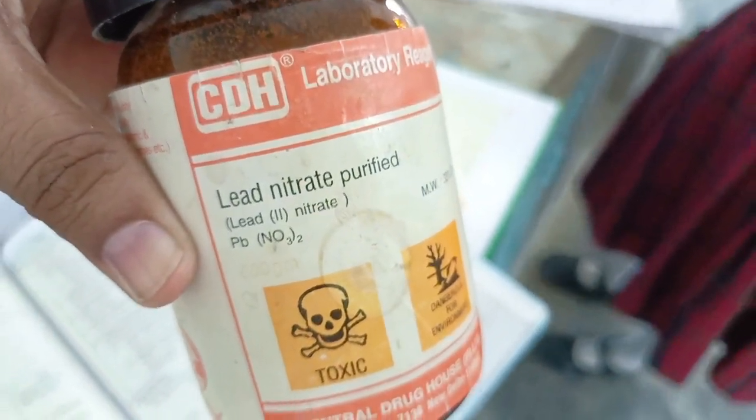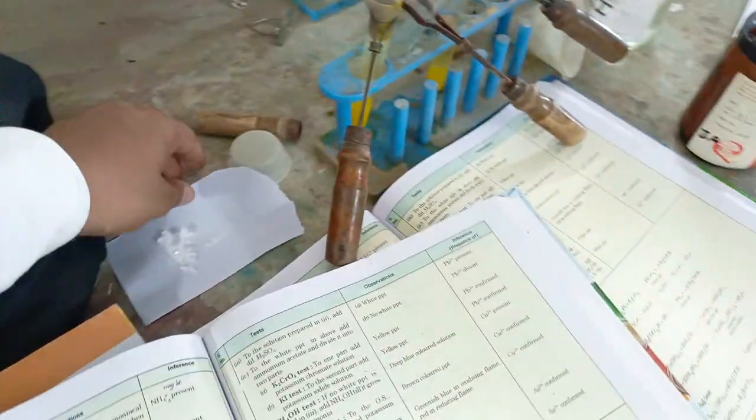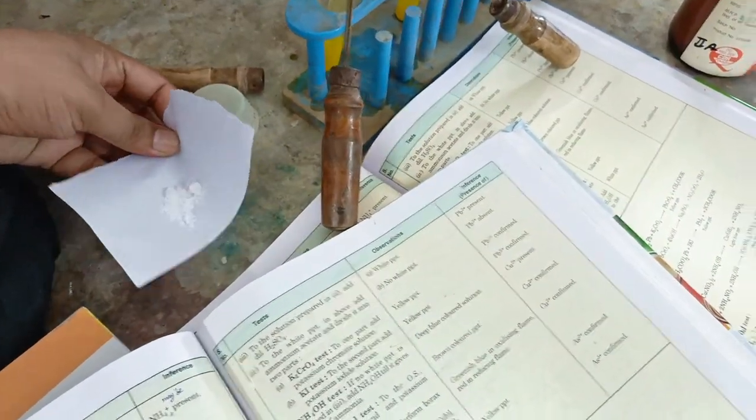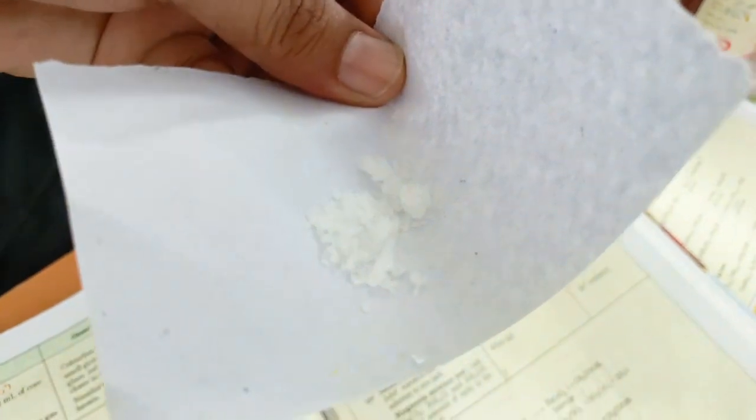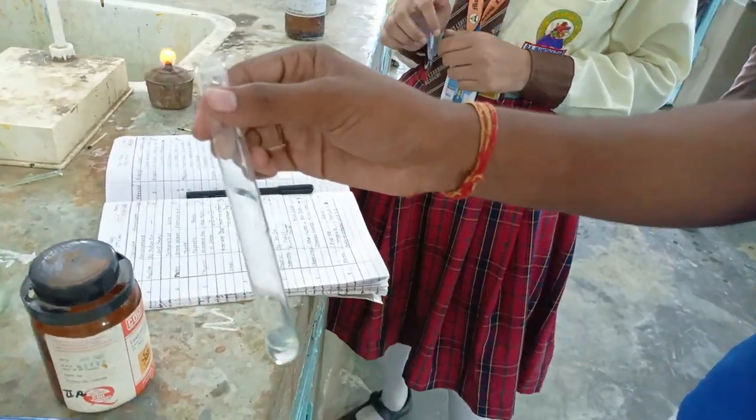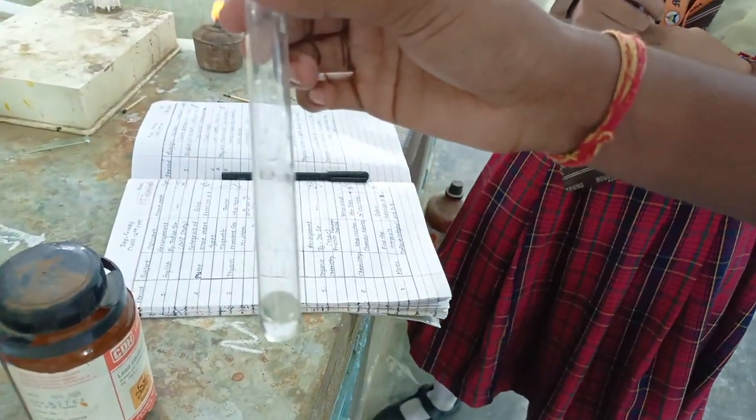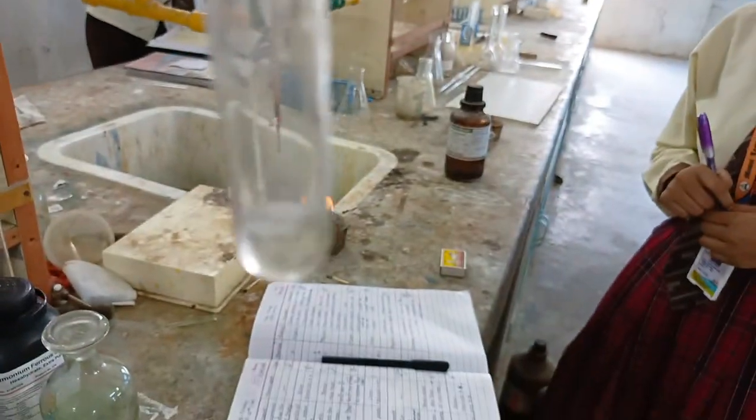Today we are going to perform a lead nitrate test. This is the salt lead nitrate. We will make the original solution by taking a pinch of salt and adding water, then we will take the transparent liquid.